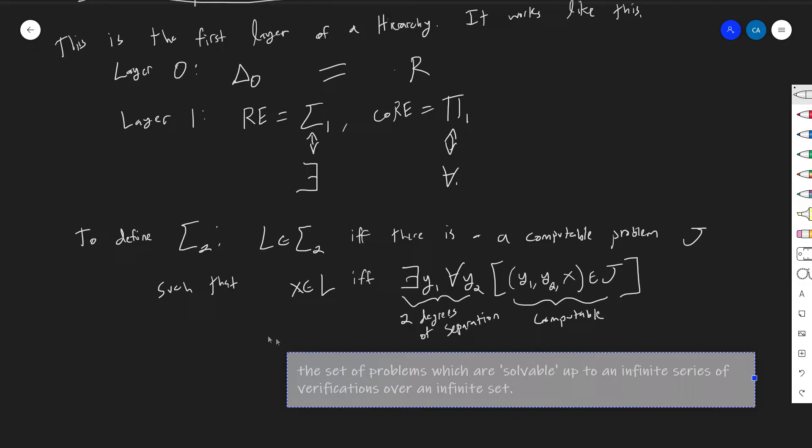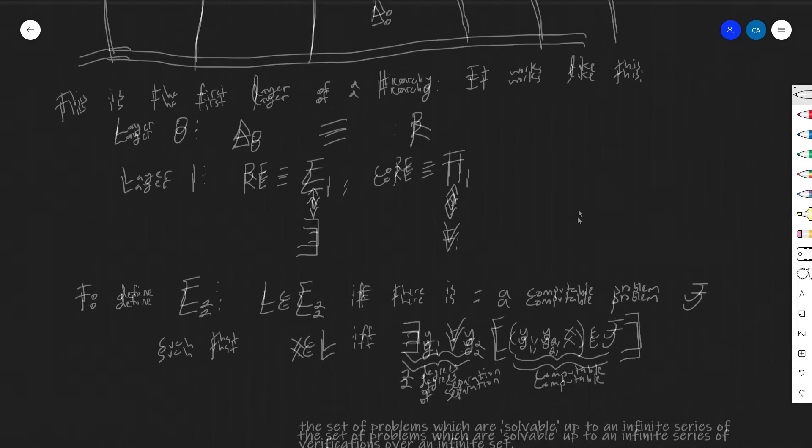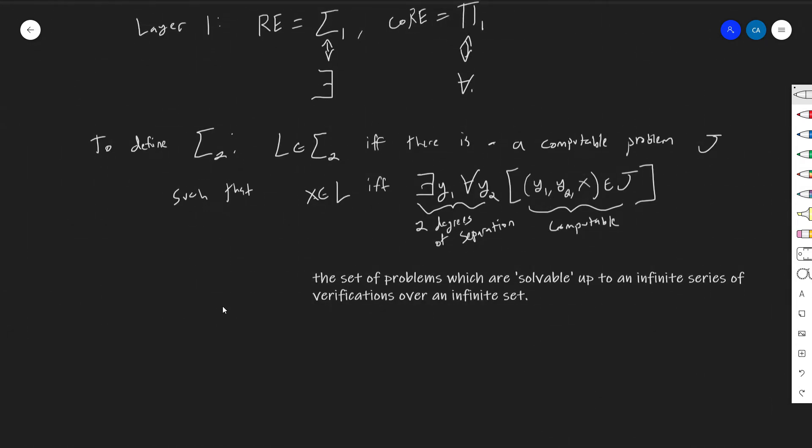So we need to, like, we need an infinite, like, set of confirmations, and we need to do that infinitely many times. That's sort of what's going on here, and you can kind of see, you know, and then we can say, you know, L is in pi 2, if and only if, and then I can kind of say the same things, x in L, if and only if, for all y1, there exists a y2, such that, you know, y1, y2, x is in j, right? I mean, I just kind of say the same stuff again.